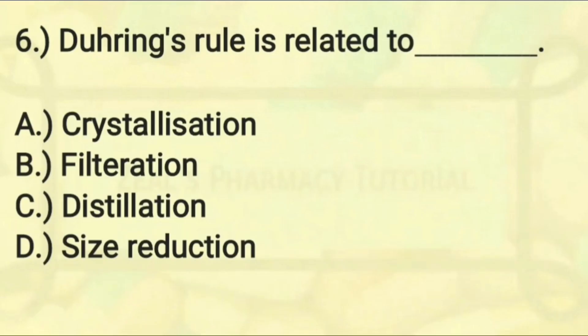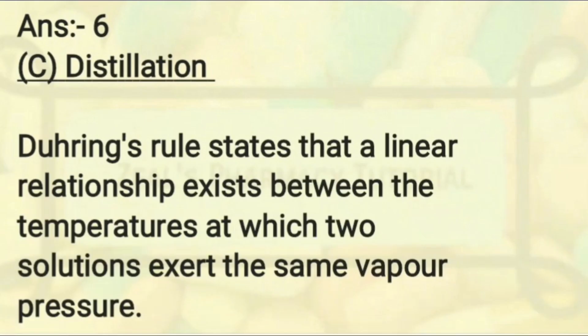Question six: Dühring's rule is related to — crystallization, filtration, distillation, or size reduction? The correct answer is distillation. Dühring's rule states that a linear relationship exists between the temperatures at which two solutions exert the same vapor pressure.